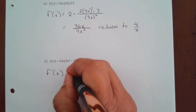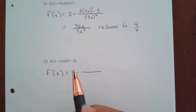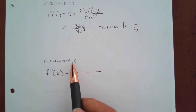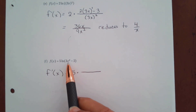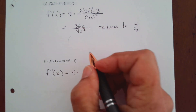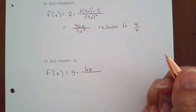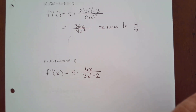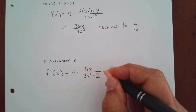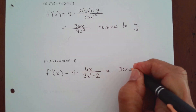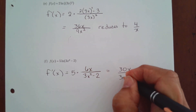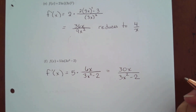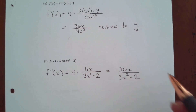For part f, the constant 5 stays. The function inside is 3x squared minus 2. The derivative of that is 6x (the derivative of the constant term is zero). So we get 5 times 6x in the numerator over 3x squared minus 2, which gives 30x over (3x squared minus 2). That cannot be simplified further, so that's your answer.